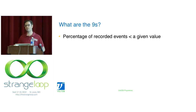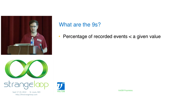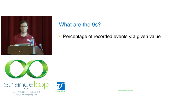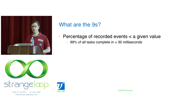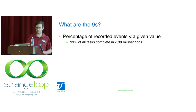I want to describe what the nines of long-tail latency are — what metric I'm describing. Basically, if you have a distribution of samples of latency, what percentage of them are less than a given value?